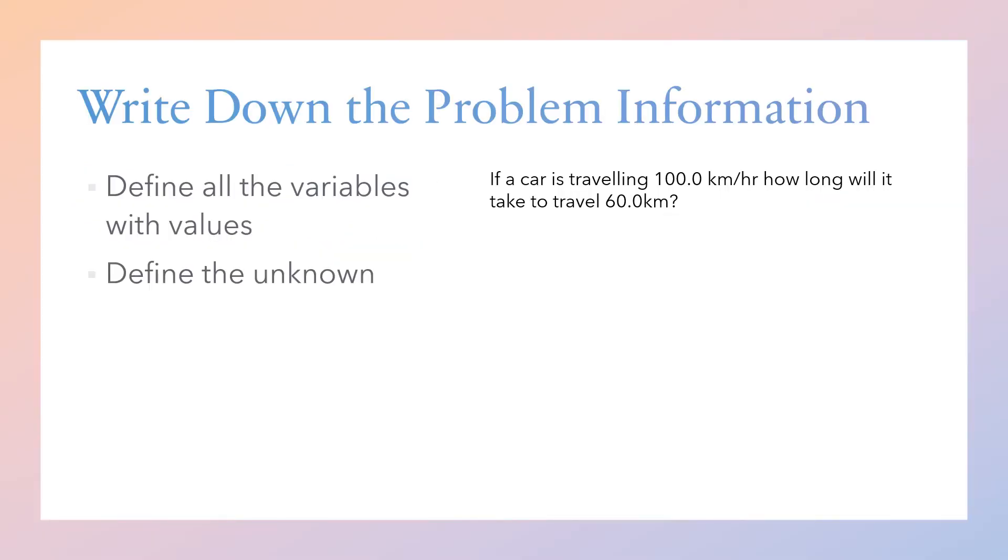The first thing you're going to be doing is writing down the problem information. We're going to define all the variables with values and define the unknown. Here we have a car traveling 100 kilometers per hour, so that's going to be our velocity: v = 100.0 km/hr. We're going to travel a distance of 60.0 kilometers, and the thing we want to know is time. So those are the three things we're working with for this problem.